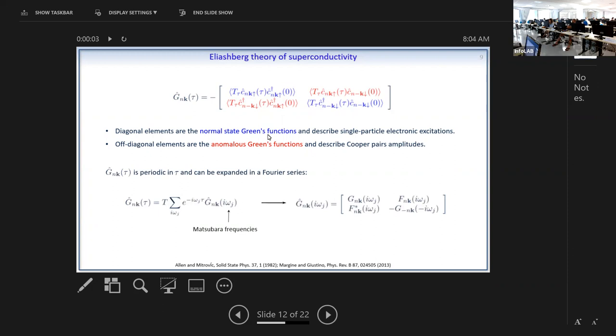The diagonal parts basically correspond to normal state Green's functions and describe single particle excitations for electrons and holes, whereas the off-diagonal elements are called the anomalous Green's functions and they describe the Cooper pairs. Again, in the normal state, these two off-diagonal components become zero. As we've already seen in a few talks, I think Sophie's talk also discussed this, to get transport it's more convenient instead of working in imaginary time to perform a transformation in which you can go into this Matsubara frequency or imaginary frequency space.